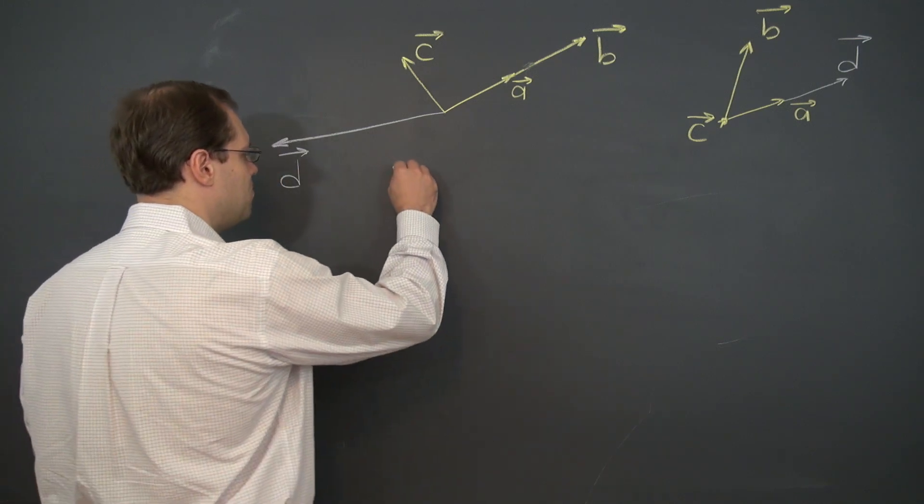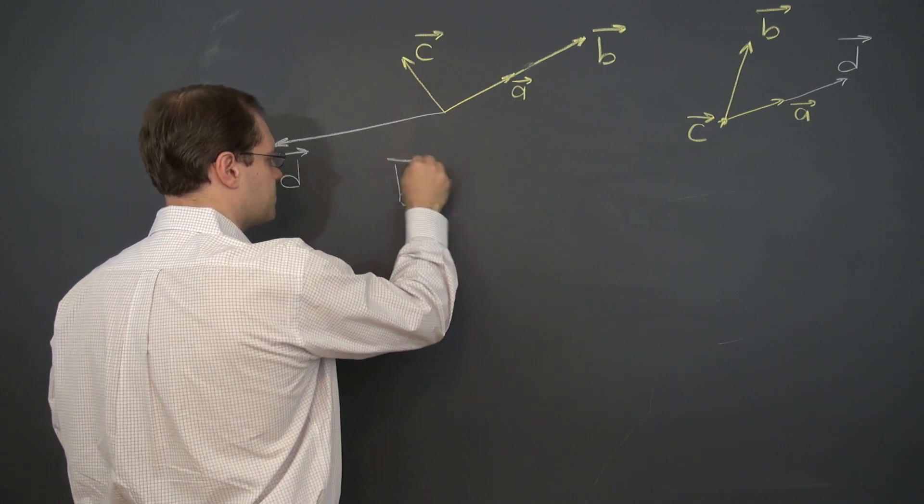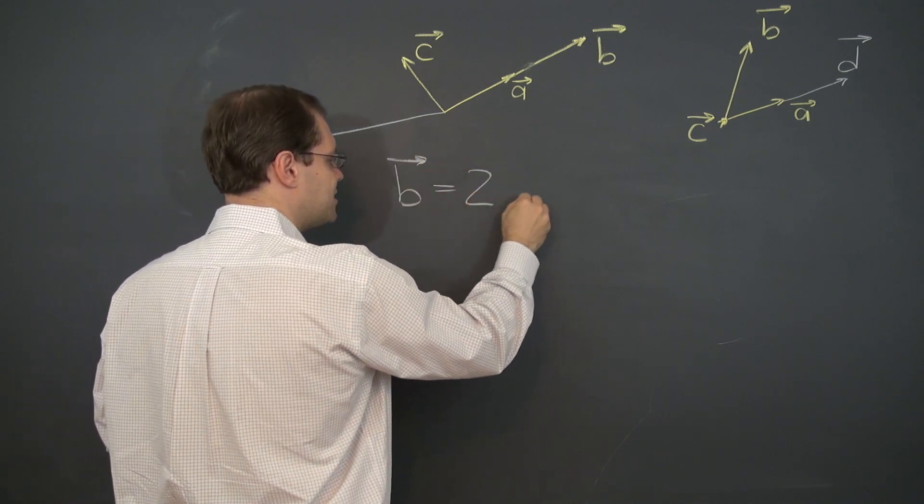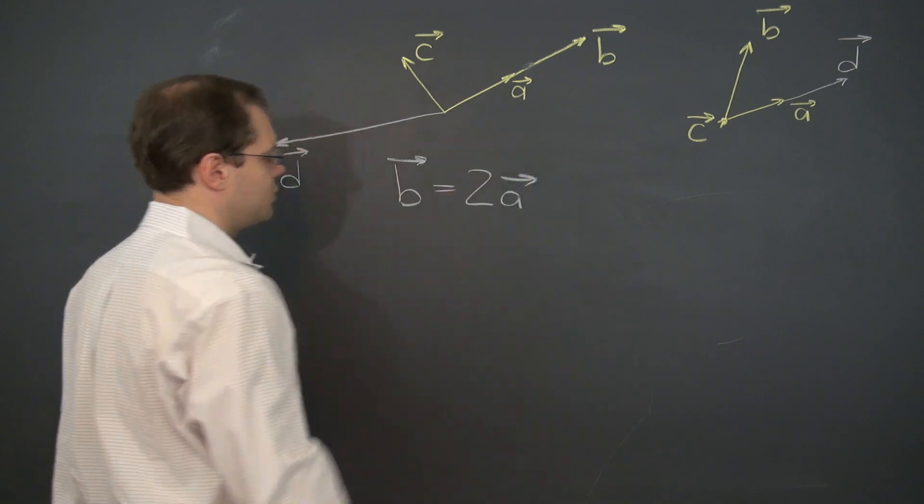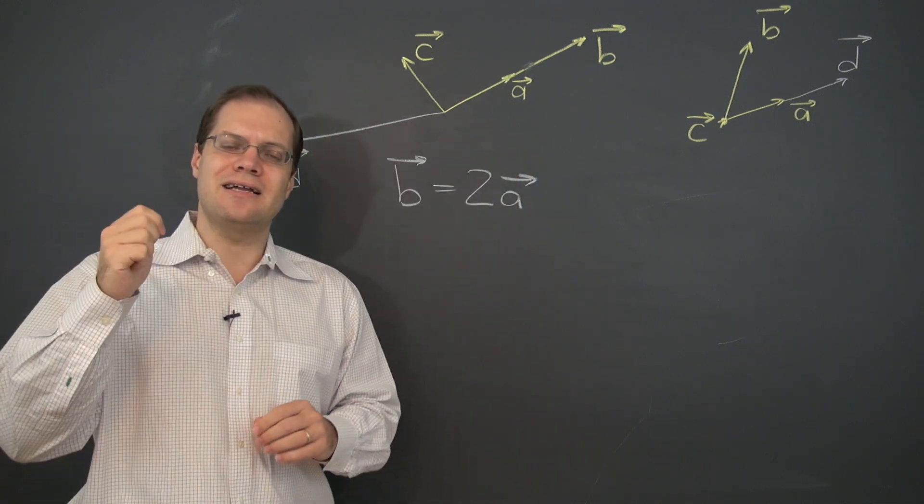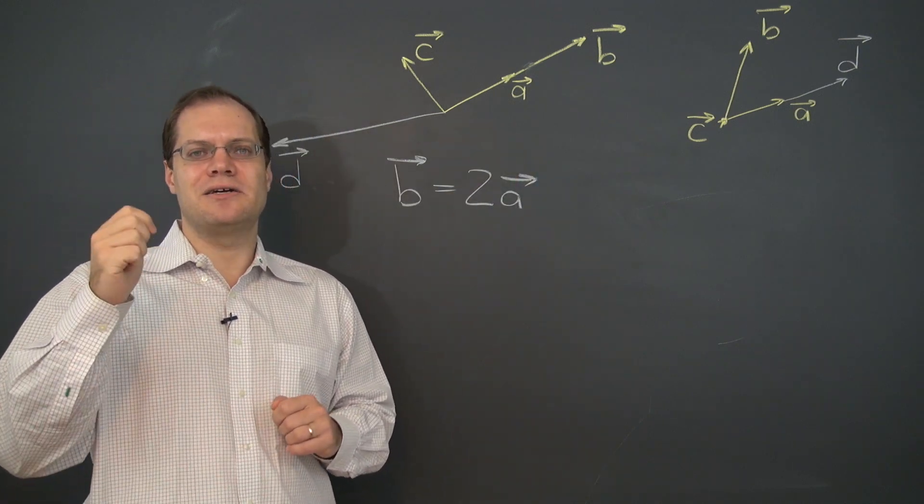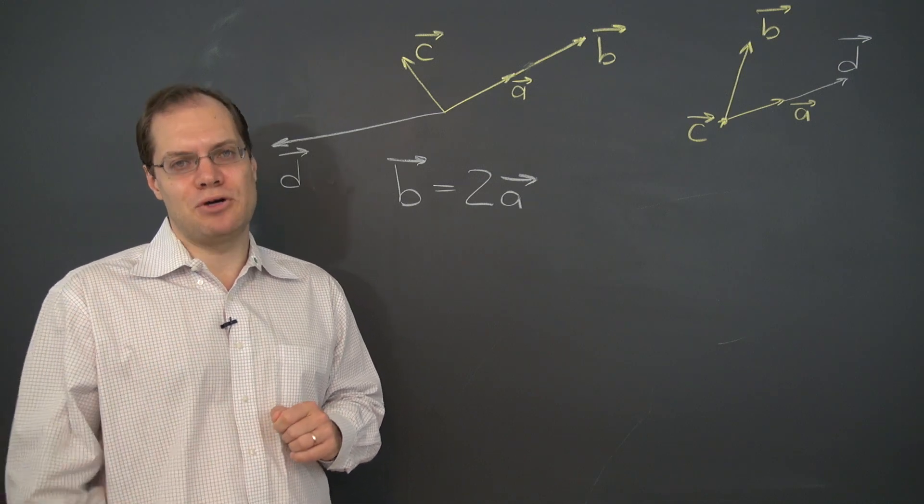It's because b is twice a. Okay, so they're linearly dependent. That immediately implies that there will be infinitely many ways to decompose d.